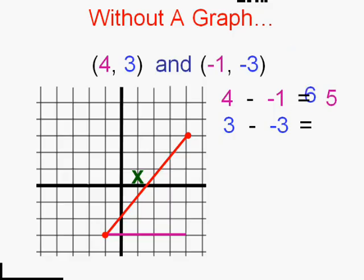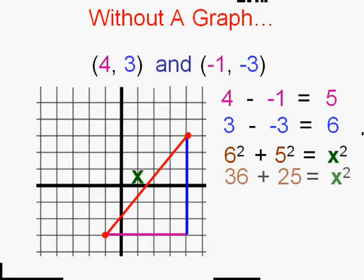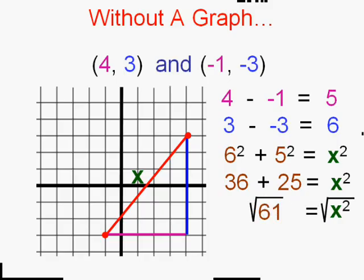The difference between the y-values is the y-side, which is, of course, 6. And we can then use the Pythagorean theorem. 6 squared plus 5 squared, same thing we did before, equals x-squared. Calculate the multiplications, add them up, take the square root of both sides, and get the same answer without drawing the graph. That's the point.